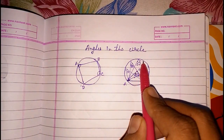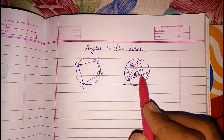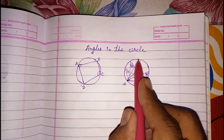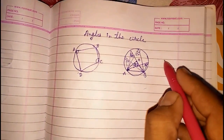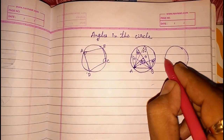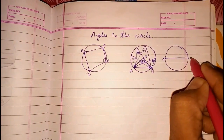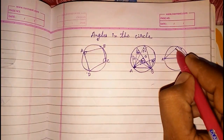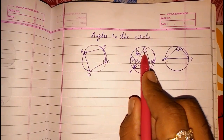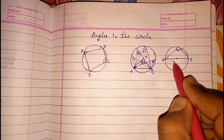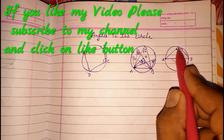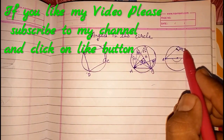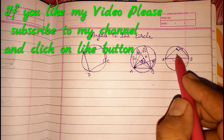And vice versa: if the inscribed angle is 25 degrees, then the central angle is 50 degrees. This applies when the angle is on the major arc. Now, if a diameter AB is given, any angle drawn on the circle from that diameter will be 90 degrees — because the central angle is 180 degrees (a straight line), so the inscribed angle is always 90 degrees. Any angle in a semicircle is always 90 degrees.